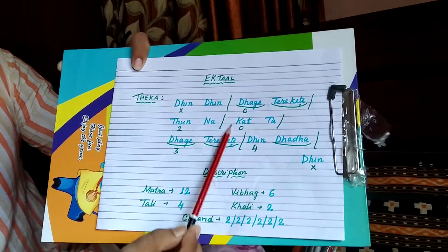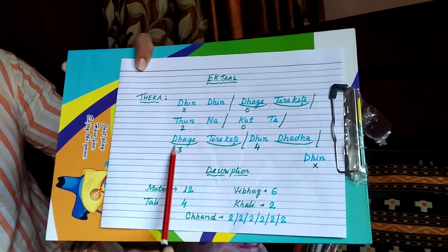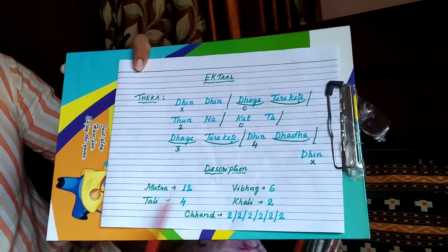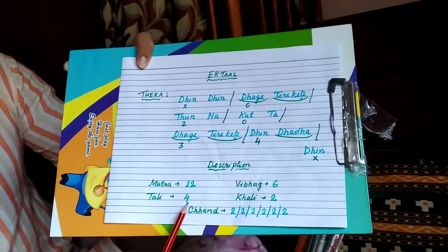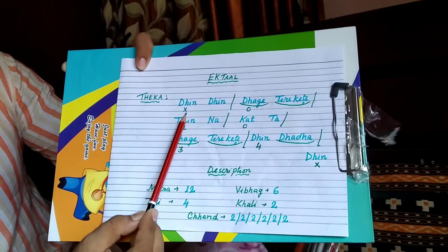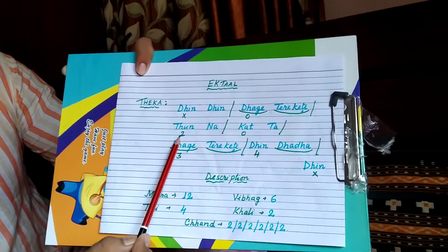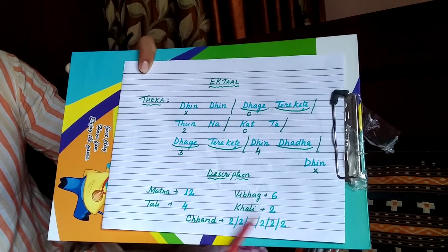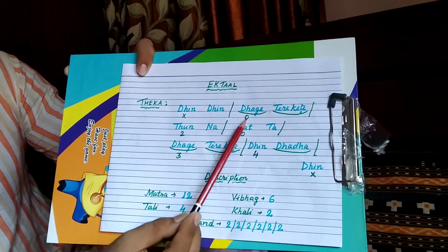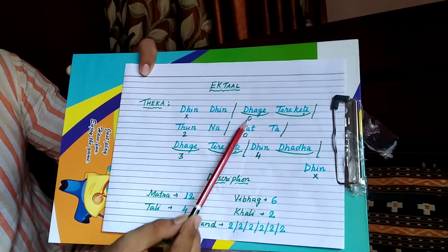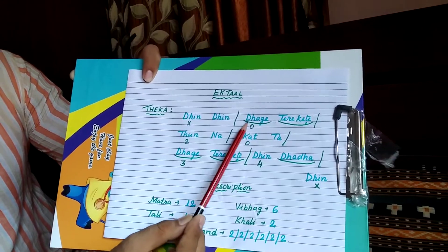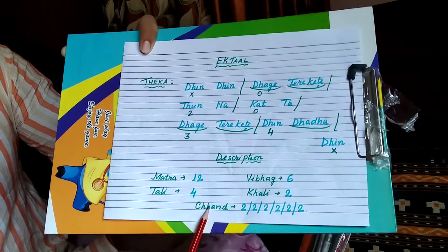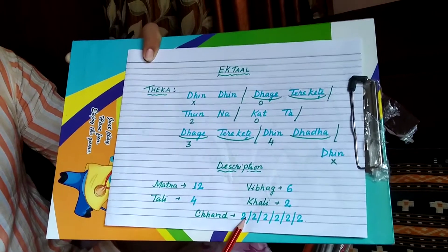Tali: 4 — there are 4 Talis: 1, 2, 3, and 4. Kali: 2 — you can see the symbol of Kali. So this division and this division have two Kalis.